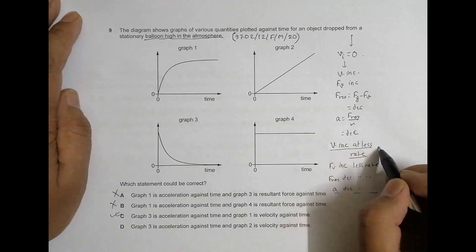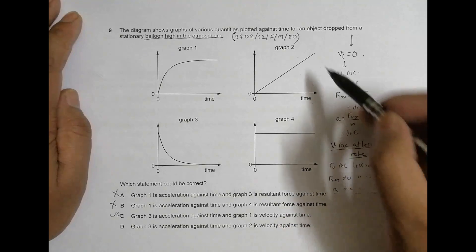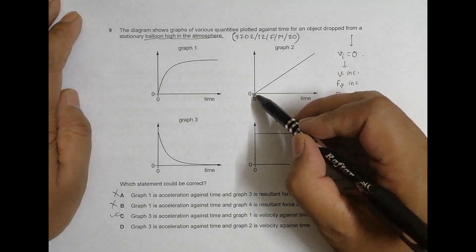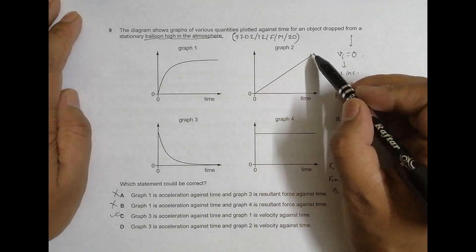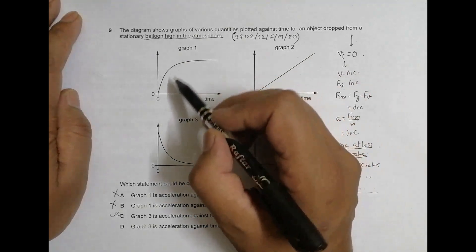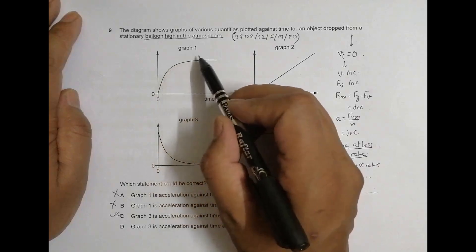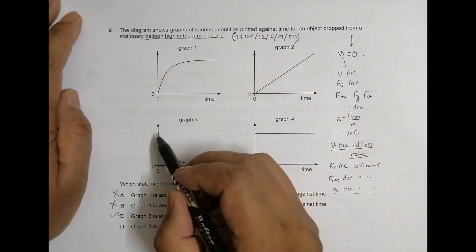So if a decreases at less rate, what we have now is we should increase at less rate. A decreases at less rate and v increases at less rate. So from here, what we have is in graph 2 it shows v increasing at uniform rate.